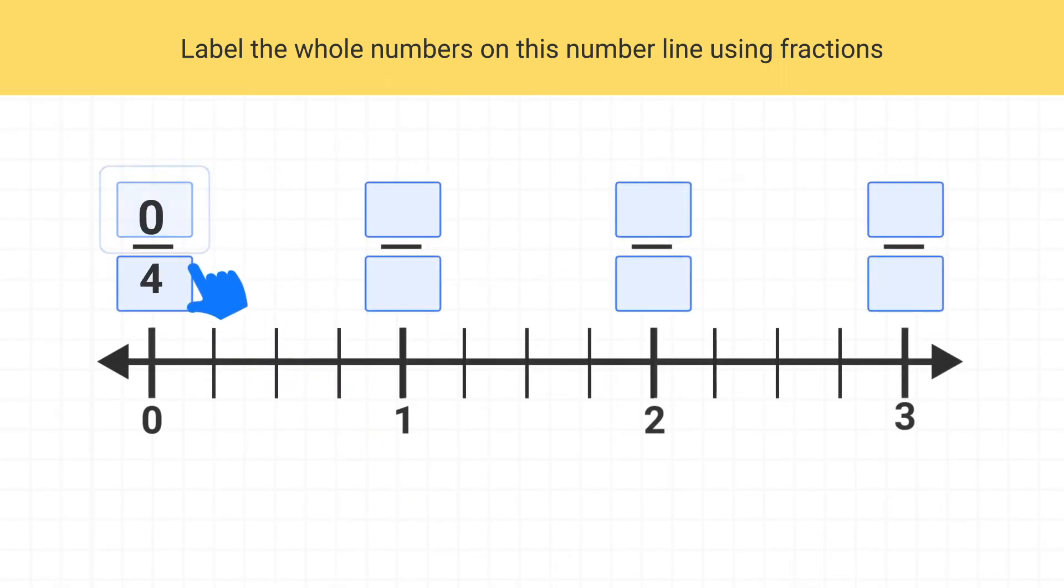We'll start at 0 fourths, then 1 fourth, 2 fourths, 3 fourths, and 4 fourths. We can see 4 fourths is equal to 1 whole.